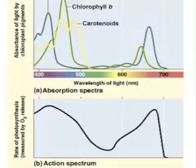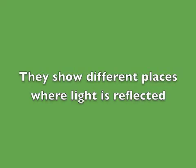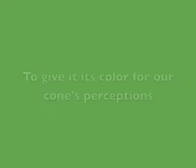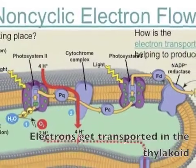Action spectra show where photosystems absorb light. Absorption spectra show carotenoids, chlorophyll B and A. They show different wavelengths where light is absorbed, giving plants their color as perceived by human vision.